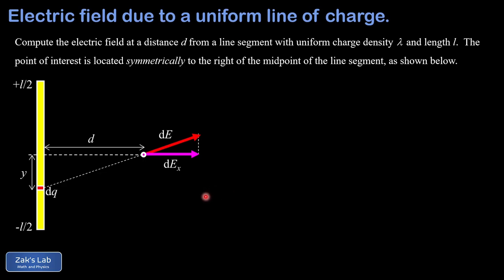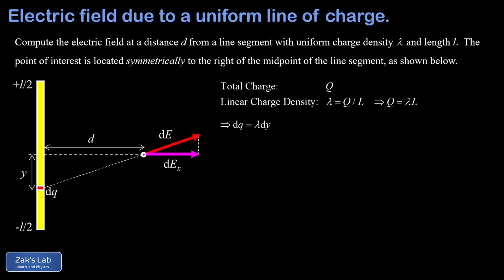Before setting things up, a couple of notes: it's convenient to name the total charge on the rod q. Also, the linear charge density lambda is the total charge divided by the length of the rod, so the total charge is lambda times the length. In particular, the size of a little charge dq is lambda times the differential length dy.